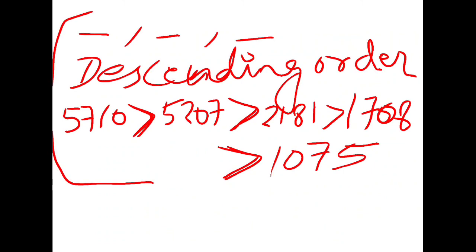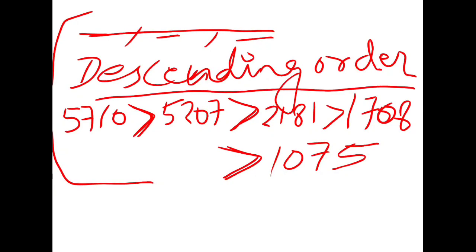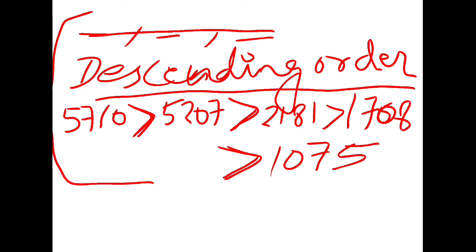In your copy, first write the question, then write 'descending order', and then arrange the numbers in this way using the greater-than symbols as shown.